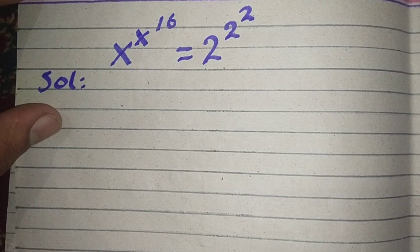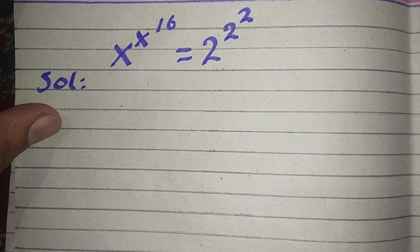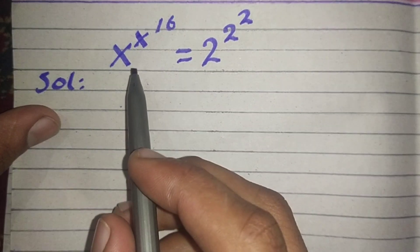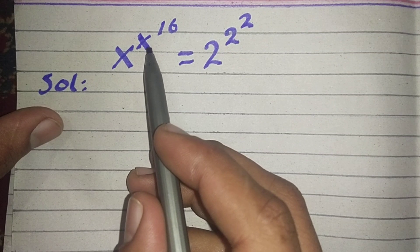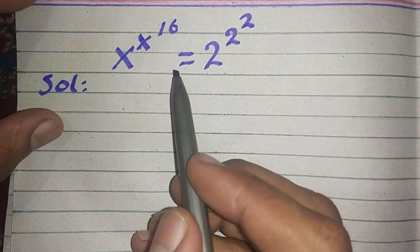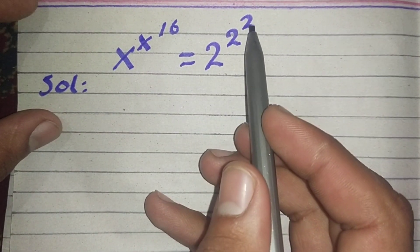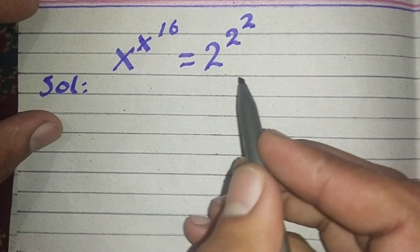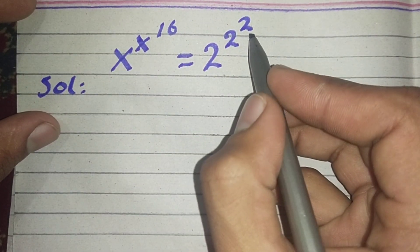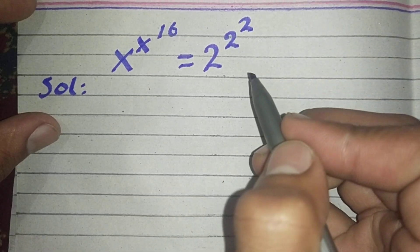In this video we are going to solve this interesting math equation. We have x power x power 16 is equal to 2 power 2 power 2. Let's go to the solution.